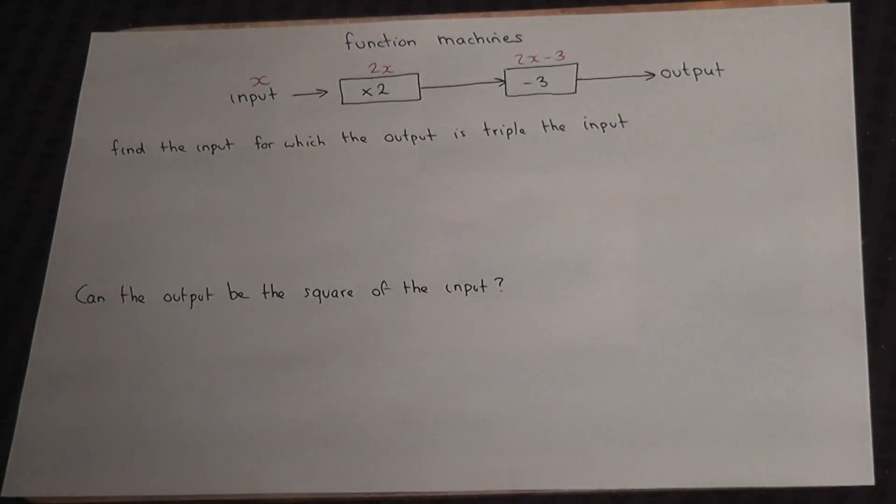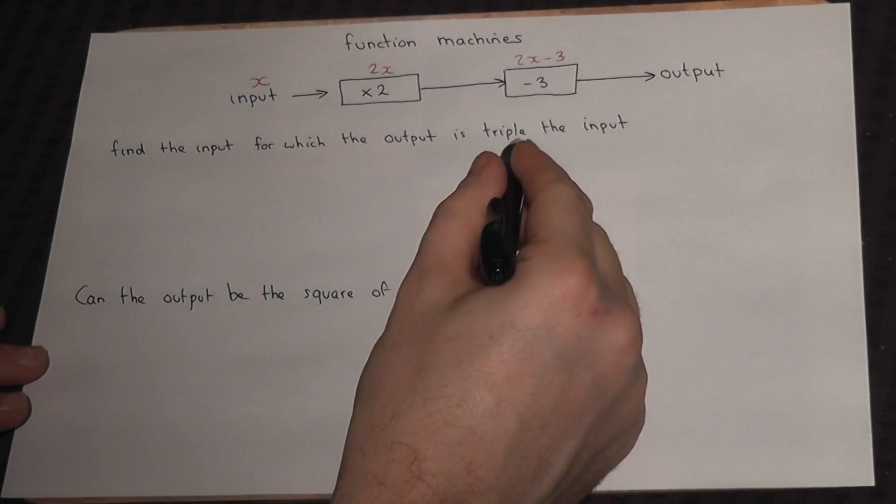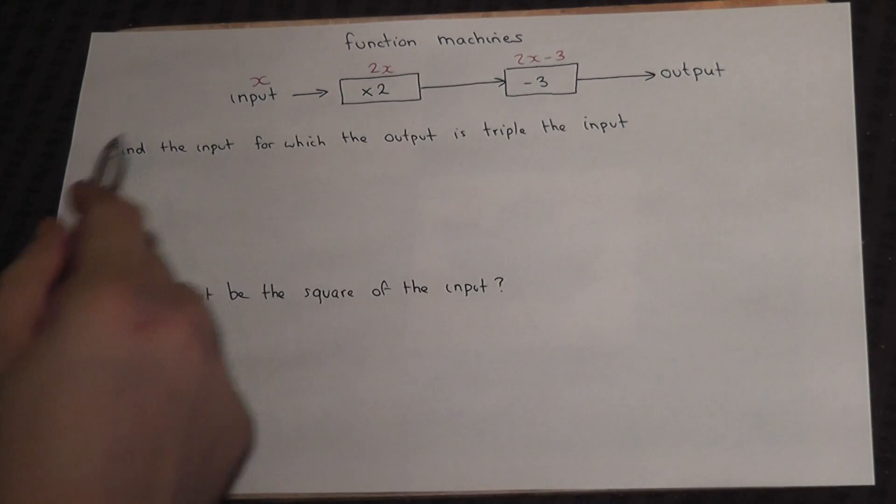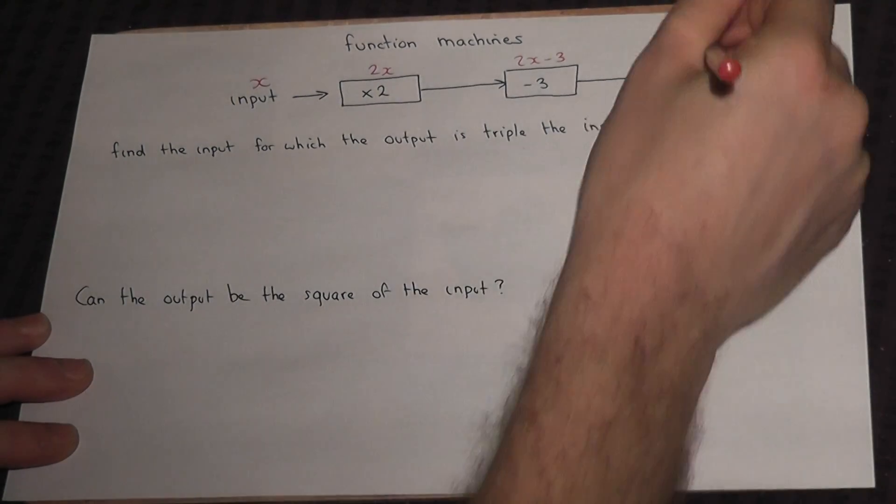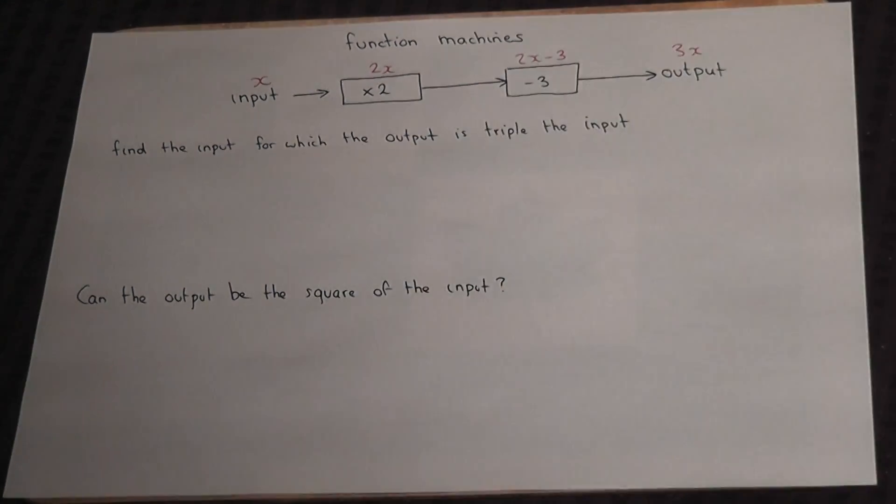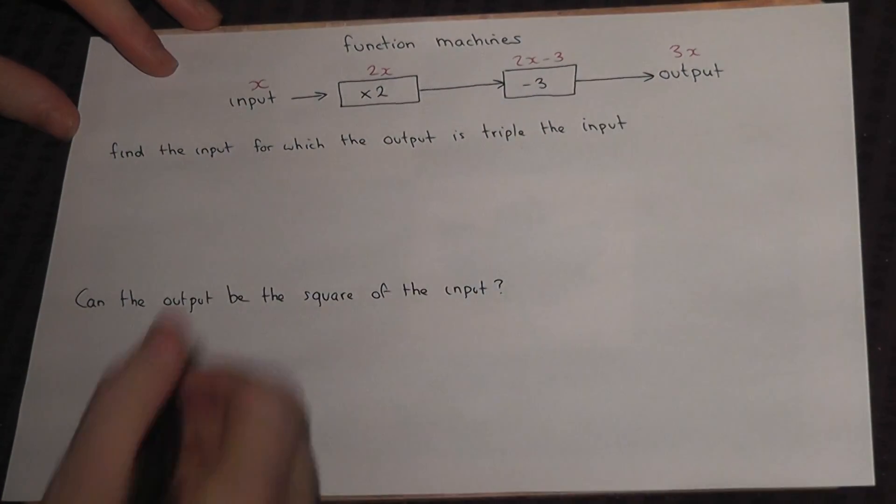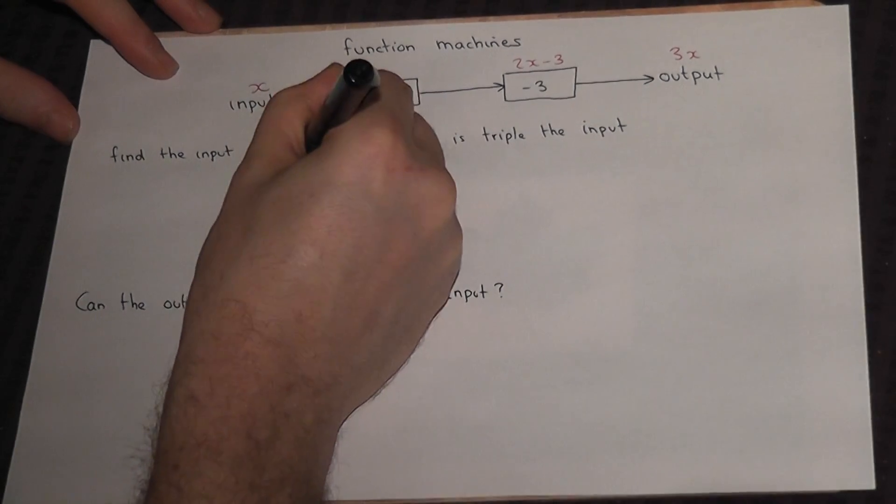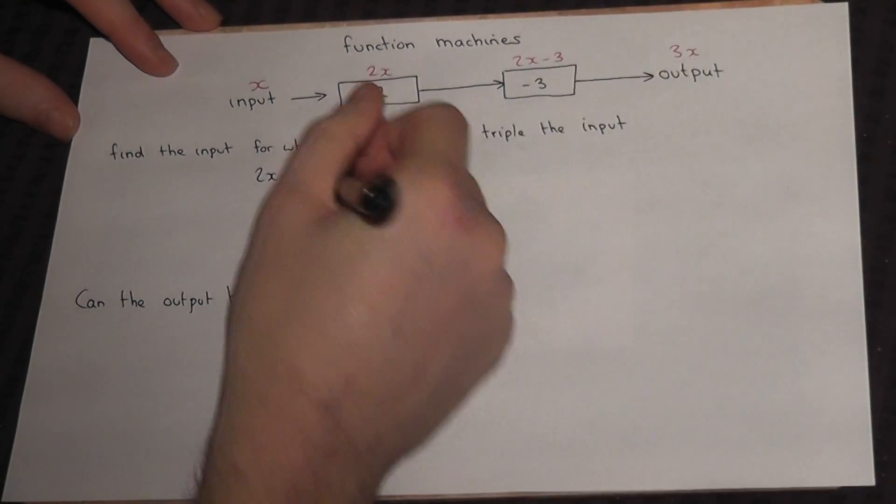In this question, we want the output to be 3 times the input. So for part one, we want the output to equal 3 lots of the input. We want 2x minus 3 to equal 3x.